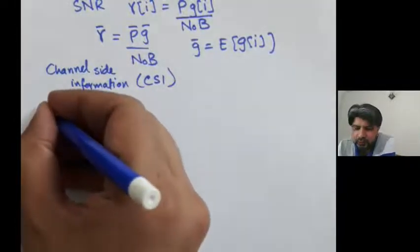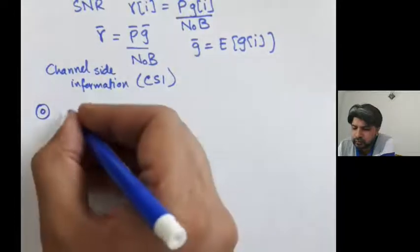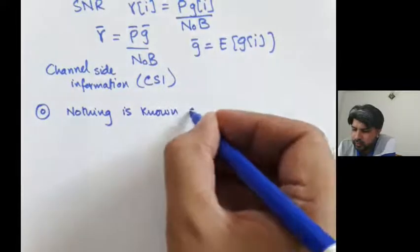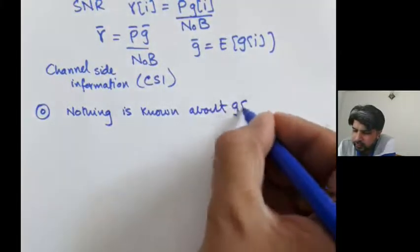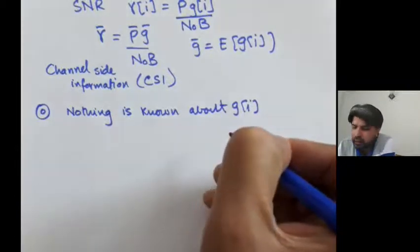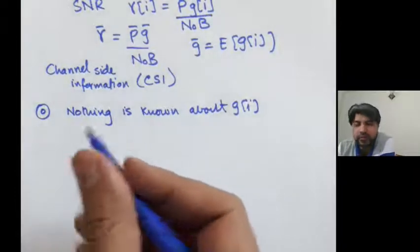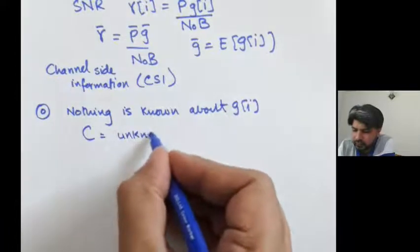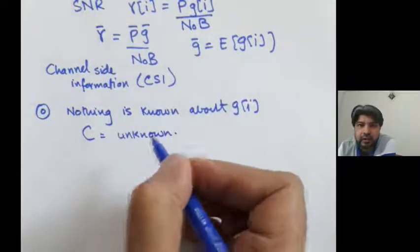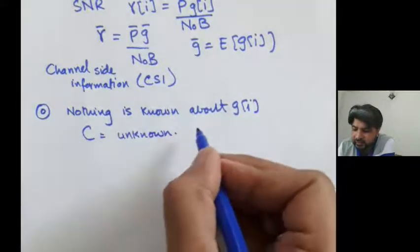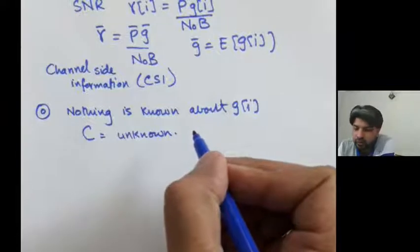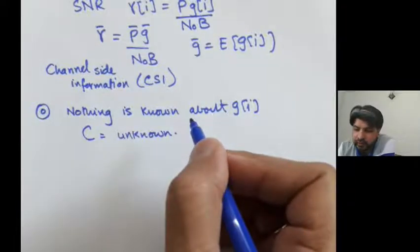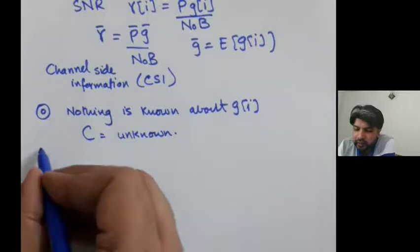Scenario 0 is that nothing is known about g(i). If nothing is known about g(i), then the capacity of the wireless channel is unknown. Experts in information theory believe it is likely that the capacity is zero, but nobody has yet solved this problem. Their hunch is that the capacity would be zero if nothing is known at either the transmitting end or the receiving end.